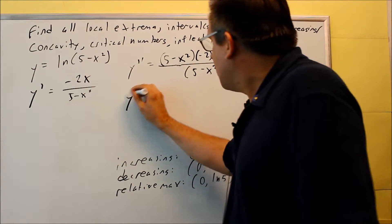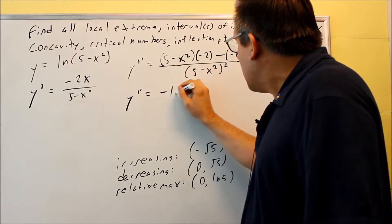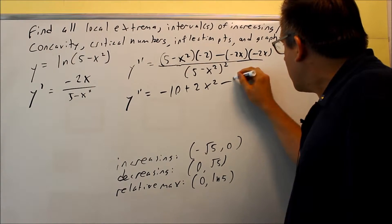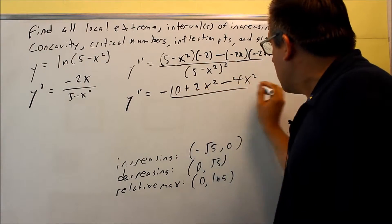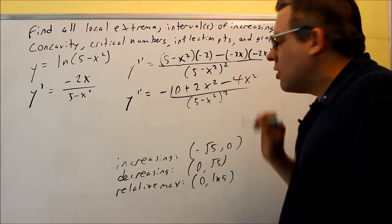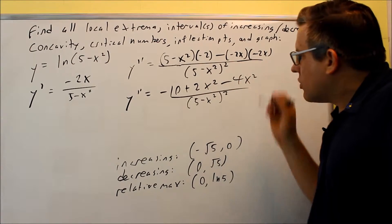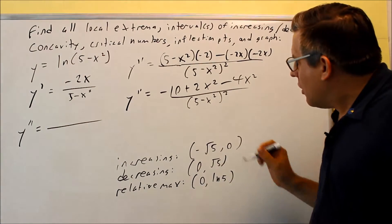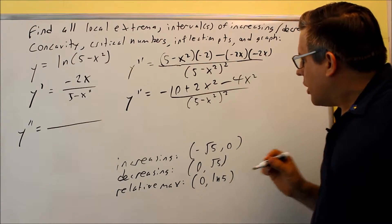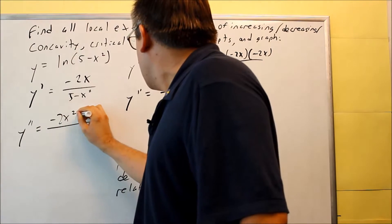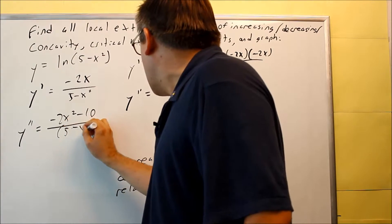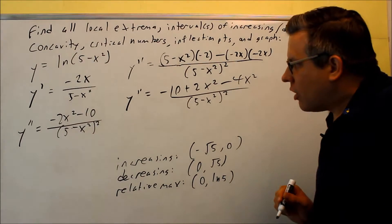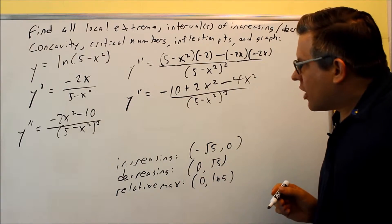Simplifying: the numerator gives negative 10 plus 2x squared, and three negatives produce a negative, giving plus 4x squared... wait, combining terms gives negative 2x squared minus 10. So the second derivative simplifies to (negative 2x squared minus 10) over (5 minus x squared) squared. You could also factor the numerator if desired.